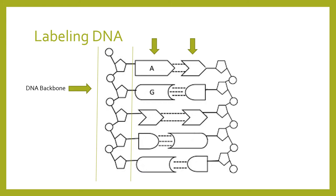The two sides of the ladder hold what we call our bases. We have four types of bases: adenine, thymine, cytosine, and guanine — abbreviated as ATCG. Each base bonds with a complementary base. The entire unit — including a base, a sugar, and a phosphate group — is called a nucleotide. So DNA is made up of nucleotides, which consist of a base, a sugar, and a phosphate all together. Those are the units of DNA.